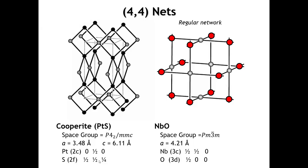Looking at four-four nets with square coordination at the cation: we see the cooperite structure on the left, with square planar Pt2+ and tetrahedral sulfur, and the niobium(II) oxide structure on the right, with square planar niobium and square planar oxygen. If we ignore which vertices are niobium and which are oxygen and treat them all the same, this would be a regular network with all vertices equivalent, all edges equivalent, and all angles equal. This is actually the fifth and final example of a regular three-dimensional network.